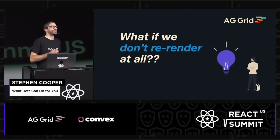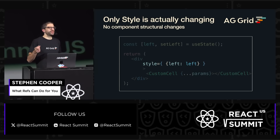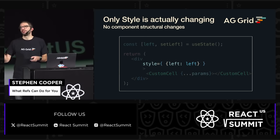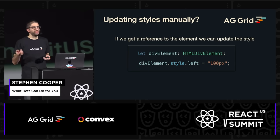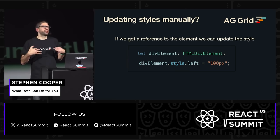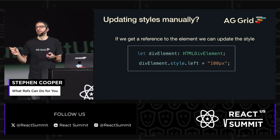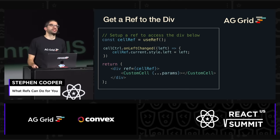What if we don't re-render at all? If we look at the component again, the only thing that we are changing when we're moving the columns around is actually a style position — it's just this left position. So can we actually update this manually? If we had a reference to the div element, we could actually set the left property ourselves. Because under the hood, that's all React is going to end up doing, since that's the only thing that has changed between those renders. So what if we do it ourselves? But then the question is: how do we get a reference to that div?